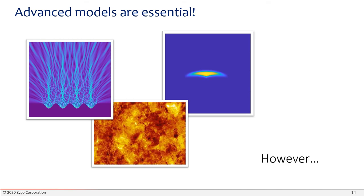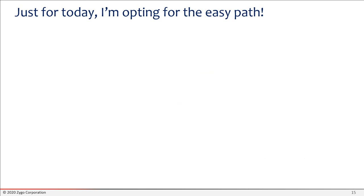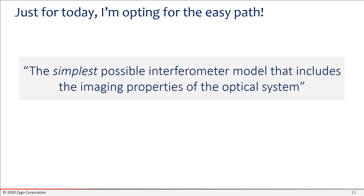However, I'm looking for the easy path. What I'm looking for is the simplest possible interferometer model that includes the imaging properties of the optical system, and I mean in a realistic way, not in a trivial way. Something that tells me how is the fact that I'm looking through lenses and limiting apertures, how is that going to affect the behavior of my interferometer, and what can I learn from that that doesn't require too much time to code. So what are the goals of a simple model?